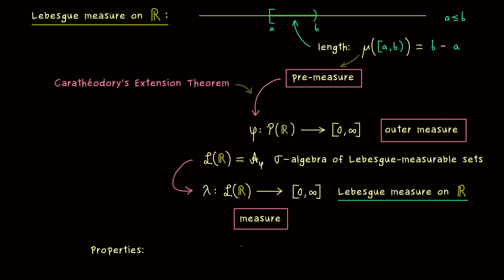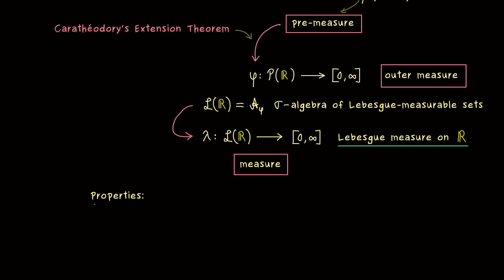And now what this actually means, we can put in the properties of the Lebesgue measure. Indeed, a measure has two defining properties. First, it needs to map the empty set to 0. And second, it has to be sigma additive.